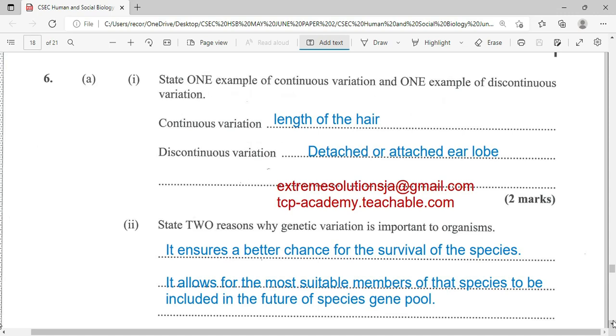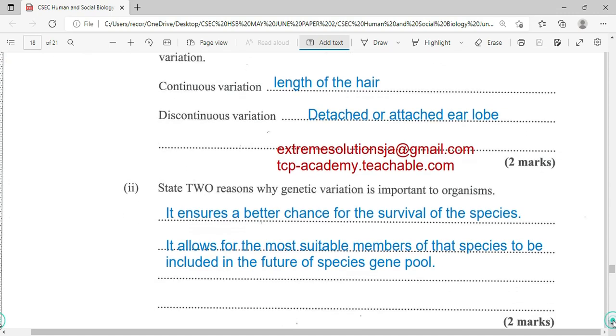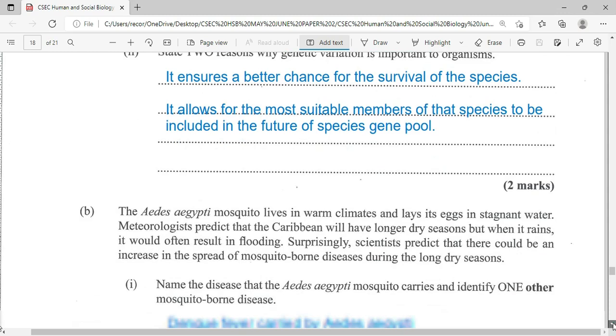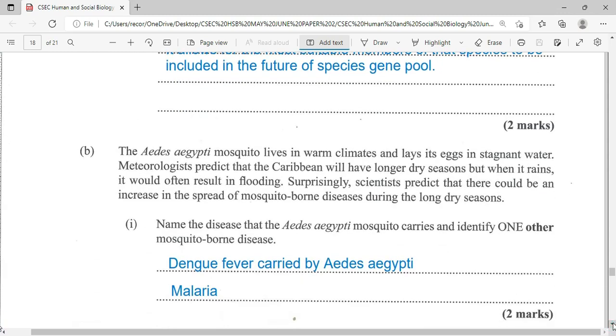Now state two reasons why genetic variation is important to organisms. It ensures a better chance for the survival of that species. Two, it allows for the most suitable members of that species to be included in the future species gene pool. So we are going to be having the best of the best moving on. As Charles Darwin would say, the fittest of the fittest will survive. And that is a result of variation. The weakling will fall, food to other organisms, or will just naturally be removed from the gene pool by natural death.